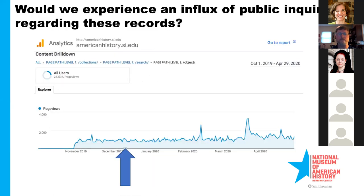Our second concern — that more online records would lead to a flood of public inquiries — has so far not been borne out. Anecdotally, public inquiries via email for the Division of Medicine and Science seem to have remained about the same. Looking at Google Analytics data for access to medicine collections records, the numbers have stayed pretty steady. We flipped the switch on December 10, 2019, and maintained a fairly even access level until our COVID bump this March.